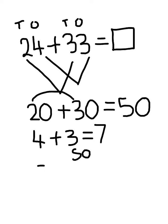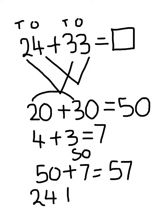50 plus 7 equals 57. Or, in other words, 24 plus 33 equals 57.